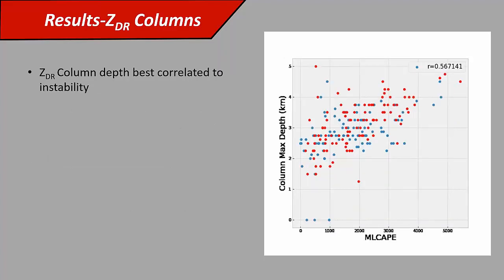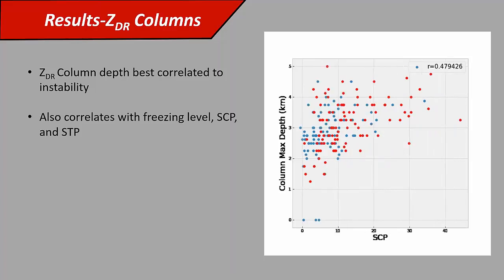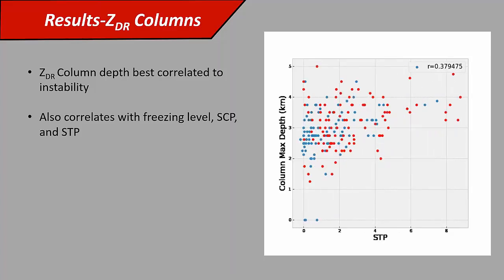ZDR column depth, for column depth it was fairly similar to ZDR column area. Instability was the best predictor of depth, correlation about 0.56. It also tended to correlate with freezing level, supercell composite, and significant tornado parameter. Interestingly, there was little correlation with shear SRH metrics for ZDR column depth. So it was primarily a function of thermodynamics in this case.